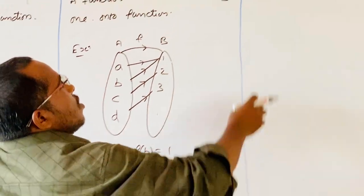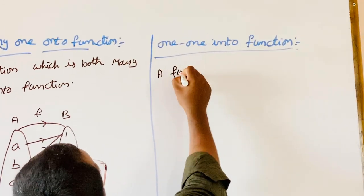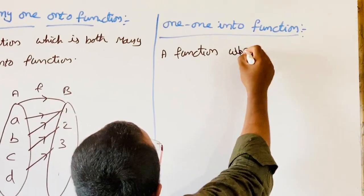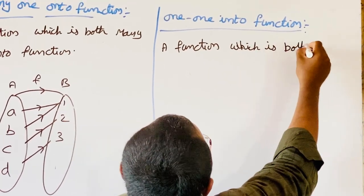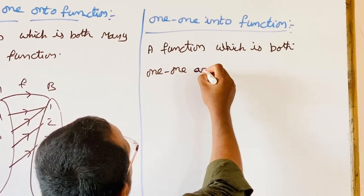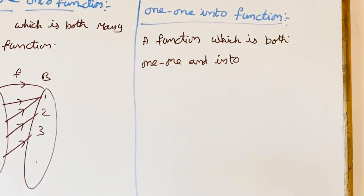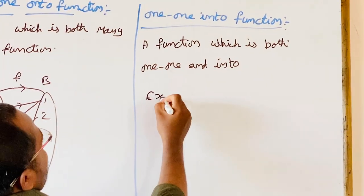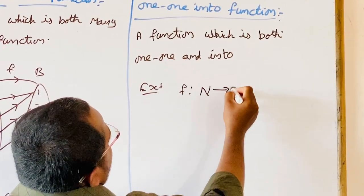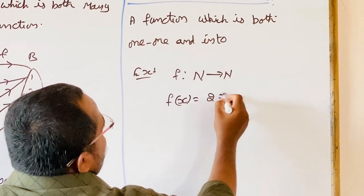Next is one-one into function — a function which is both one-one and into. For example, f(x) = 2x.